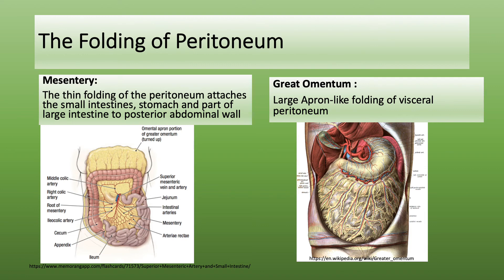I want to briefly mention mesentery and greater omentum. The thin folding of the peritoneum that attaches the small intestines, stomach, and part of the large intestine to the posterior abdominal wall is called the mesentery. You may see it during dissection of a cat, mink, or fetal pig. It helps in storing fat and allowing blood vessels, lymphatics, and nerves to pass through and supply the intestines. The large apron-like folding of visceral peritoneum is called the greater omentum. It hangs down from the stomach and the transverse colon, and is also known as the police of the abdomen due to its rich blood supply and lymphocytes which fight to protect our body against infections.